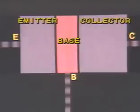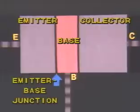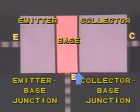The base region is in the center of a bipolar transistor, so both PN junctions border the base. One junction is between the base and the emitter region — the emitter-base junction — and the other is the junction between the base and the collector, called the collector-base junction.